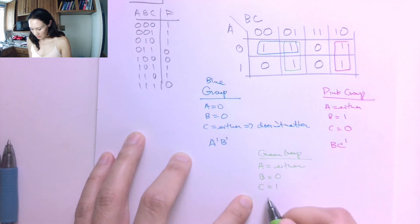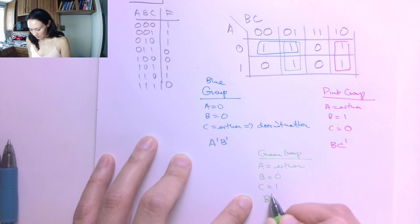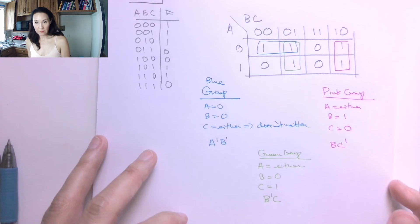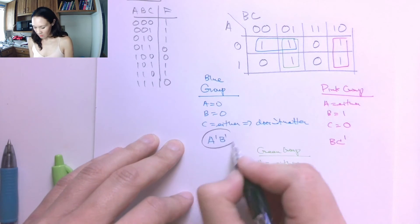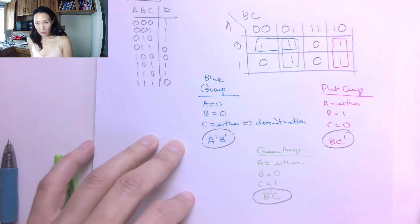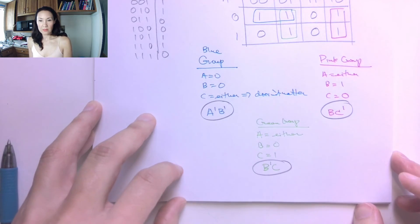So for this green group, we don't need to put a in there, because it can be either 0 or 1. But we do need b to be 0. And we need c to be 1.